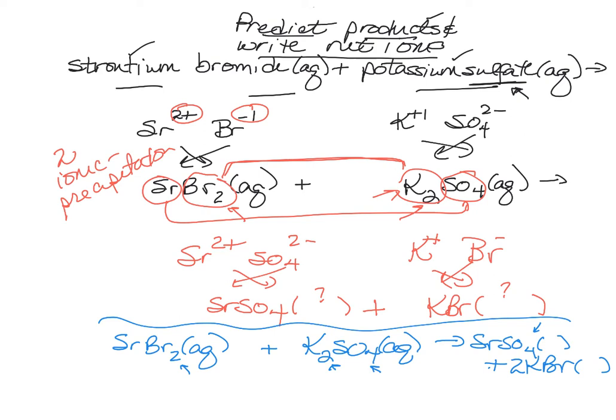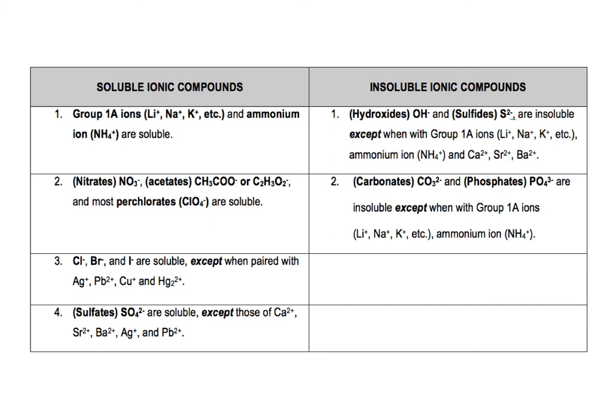Now, I need to look at the solubility table. And I need to determine if strontium sulfate and potassium bromide are soluble. So, that when I write my ionic equation, I know whether to split them up. So, how do we determine that? Well, most of the soluble on the left side are listed according to the anion. So, I've got to find sulfates in here.